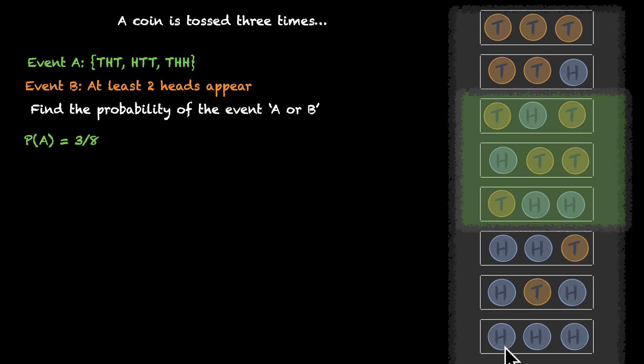And we can add head head head as well. One, two, three, four. These four events will be part of this event B. So probability of event B is four by eight.